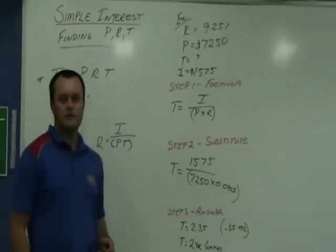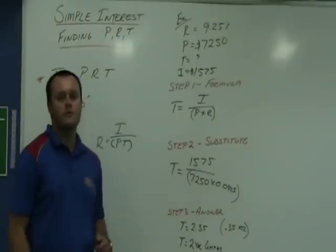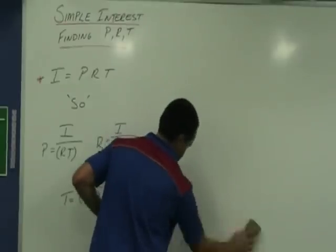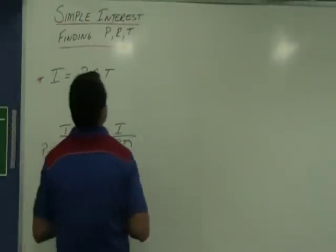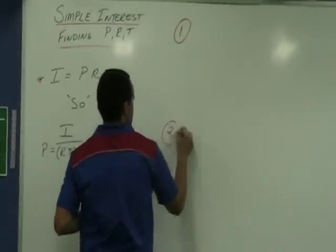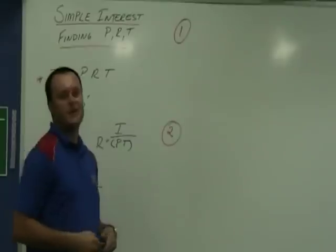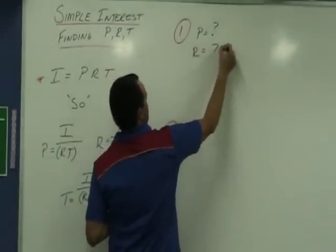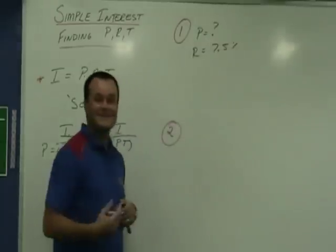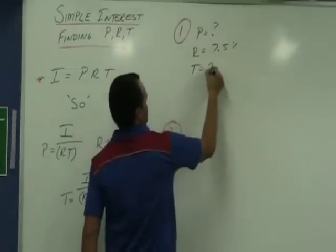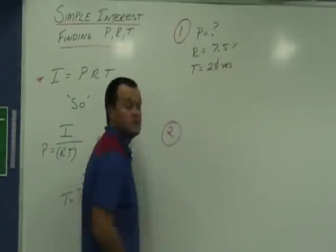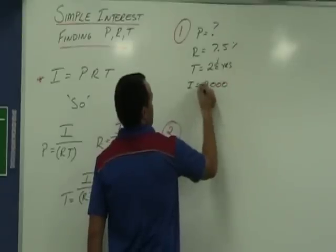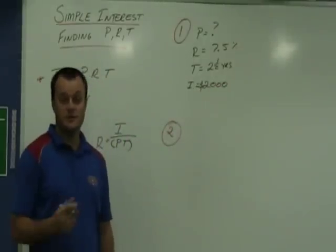All right, let me give you two practice questions. You go away, have a go at it. We'll come back and we'll go through the answers. Practice question number one. Let's find a principal. Rate, 7.5%. Time, 2 years. We'll find $2,000 in interest is how much we've earned.